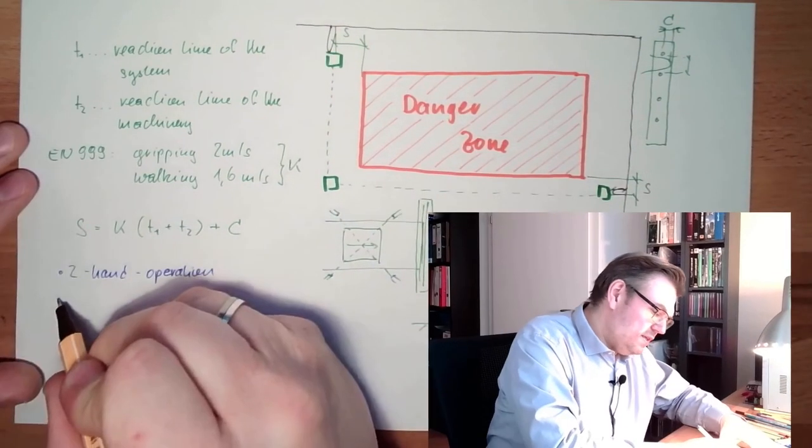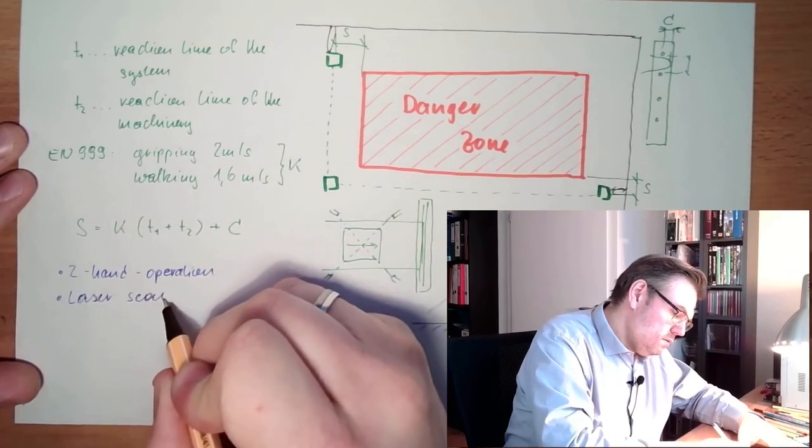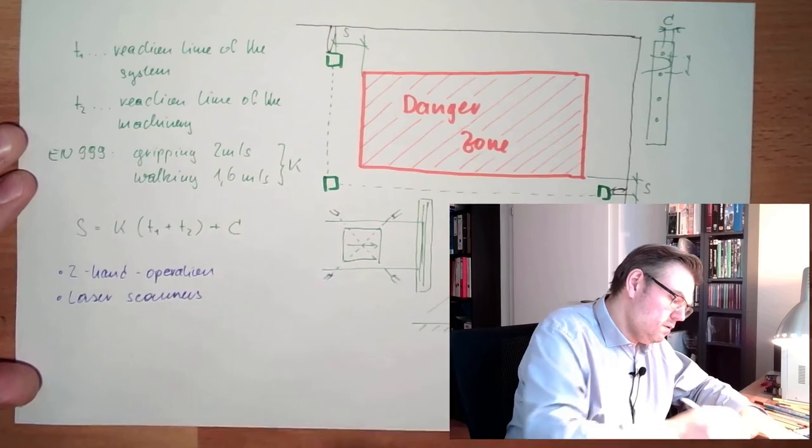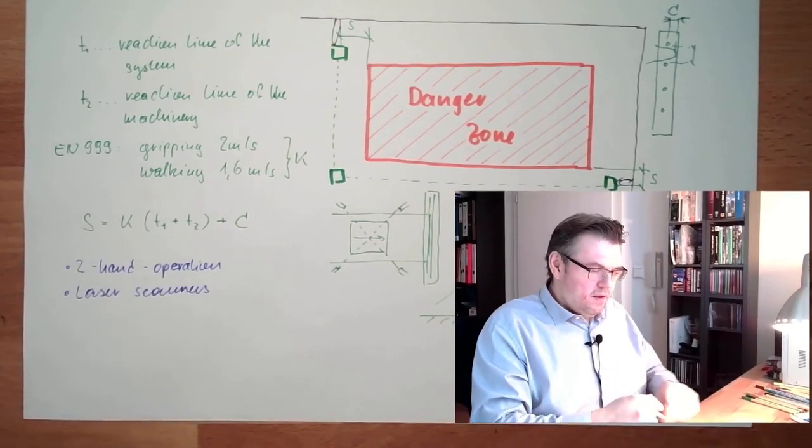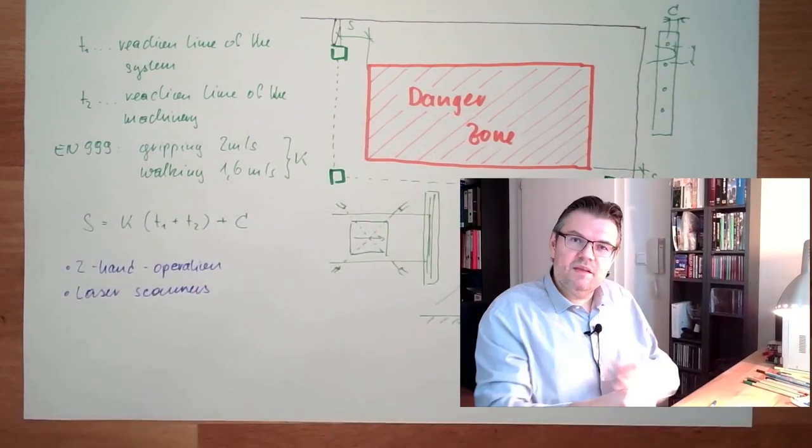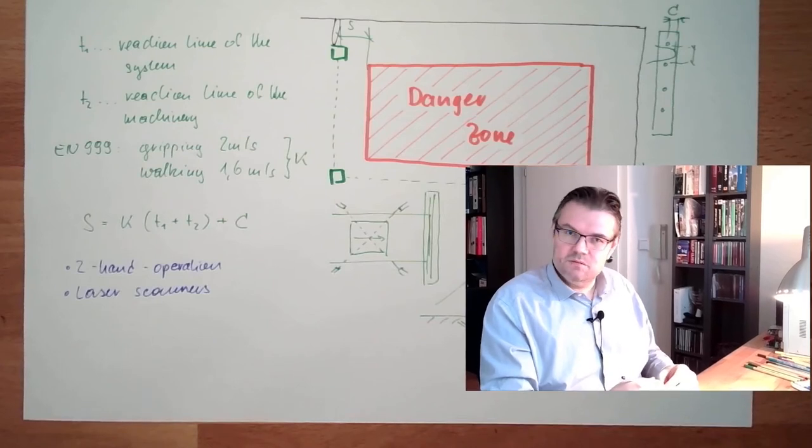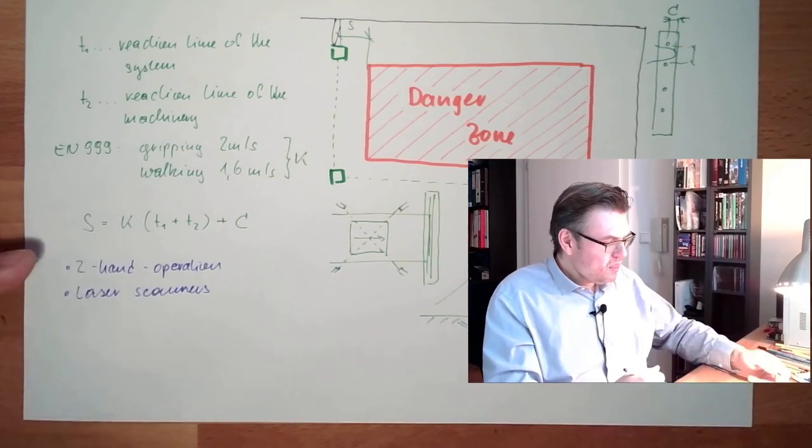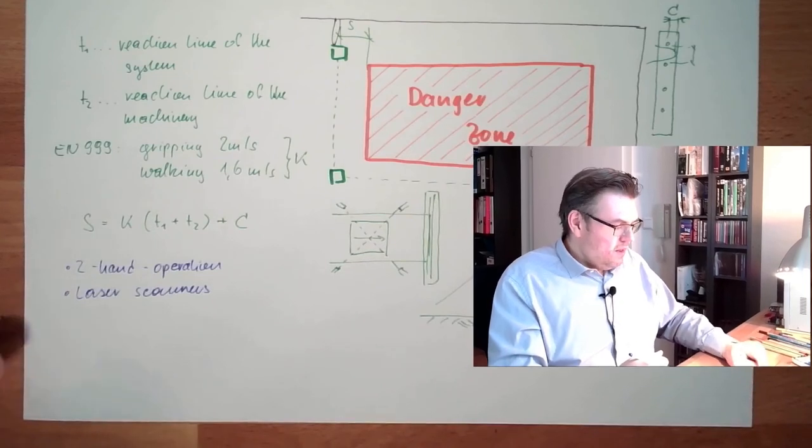Then there are, of course, laser scanners. There's a laser point scanning the area and whenever it's reflected, it knows something is inside. Working a little bit like these light barriers we talked about.